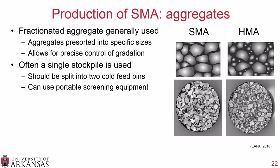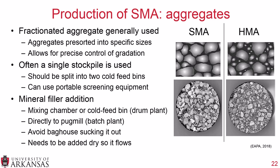For mineral filler addition, you can add it in the mixing chamber or cold feed bin in a drum plant, or directly to the pug mill in a batch plant — to avoid the bag house sucking it out. Because mineral filler is so fine, the plant vacuum could remove required mineral filler from the mix. You also want to make sure the material is added dry, since it must flow and get evenly mixed into the SMA mixture.